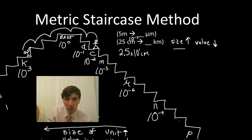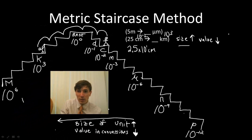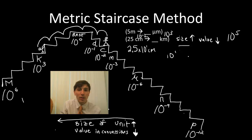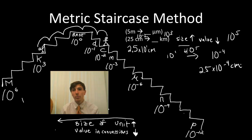I look at the differences in powers of ten. Centi is 10 to the minus 2; kilo is 10 to the third. The difference between these two is 5 steps, so my value has to go down by 5 powers of 10. I look at this 10 to the 1 — it has to go down by 5 powers of 10 — so we subtract 5, giving 10 to the negative 4th. So 2.5 times 10 to the negative 4th kilometers is our final answer.